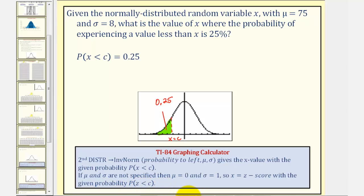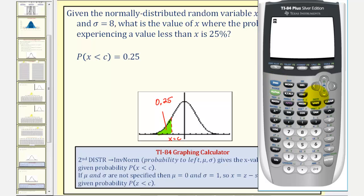So using the TI-84, we'll press second VARS for the distribution menu, option three for inverse norm. Now we'll enter 0.25, the probability to the left, so 0.25.